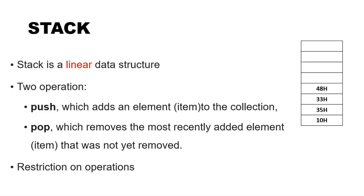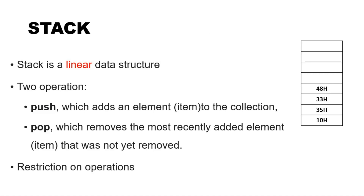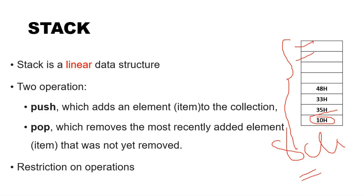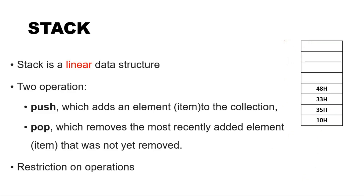Stack is a linear data structure. Linear means it is in a straight line — in terms of memory, stack is consecutive memory allocated. So linear data structure means the addresses of every cell inside the stack are continuous. Every item the stack can store is called a cell. For example, a stack with eight cells can store eight different items, which is also called the capacity or size of the stack.